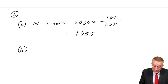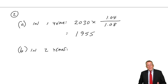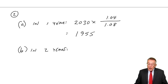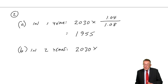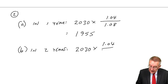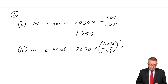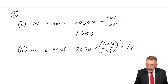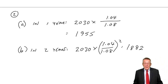For two years' time: either take 1,955 and multiply by another 1.04 over 1.08, or take today's rate of 2,030 and multiply by (1.04 over 1.08) squared. That gives approximately 1,882 — allowing for a bit of rounding, perhaps 1,882 or 1,883.